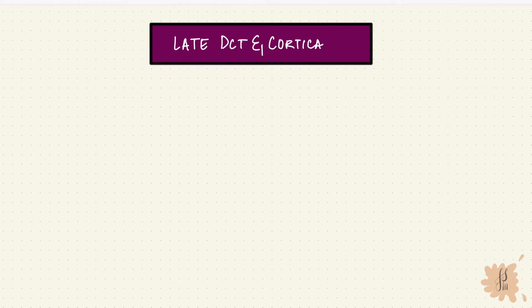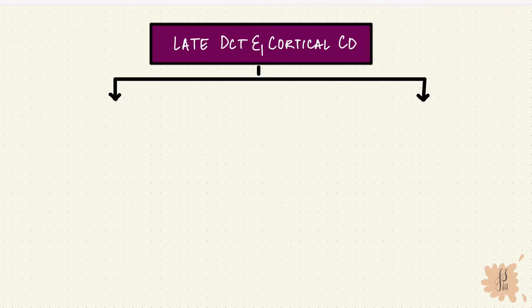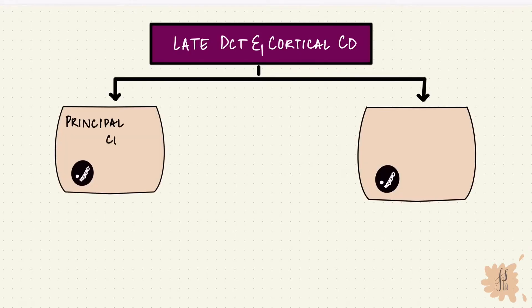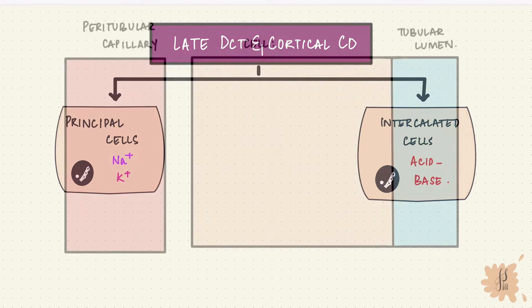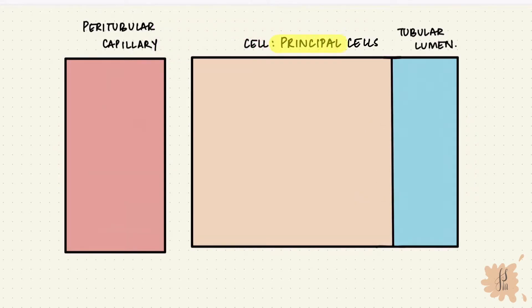The late distal tubule and the cortical collecting duct are functionally similar, that's why we consider them together. They have two types of cells: the principal cells and the intercalated cells. The principal cells are more concerned with sodium and potassium, while the intercalated cells are more with acid-base regulation. The principal cells, like the other parts of the nephron, have a sodium-potassium ATPase on the basolateral membrane, so that pushes three sodium out and brings two potassium into the cell.